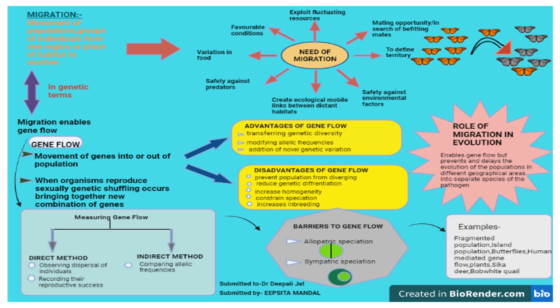The barriers to gene flow are allopatric speciation and sympatric speciation. In allopatric speciation, a physical barrier is established which leads to separation of populations and prohibits gene exchange, so new species are formed from geographically isolated populations. In sympatric speciation, reproductive isolation occurs among populations that occupy the same geographical area and may develop without any geographical isolation. The population splits into groups that occupy different ecological zones and genetic exchange is prevented, so new species develop within the range of ancestor populations.